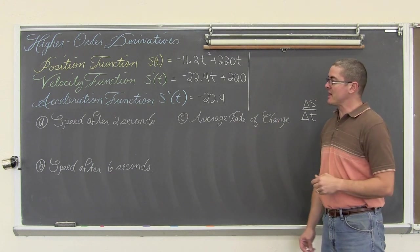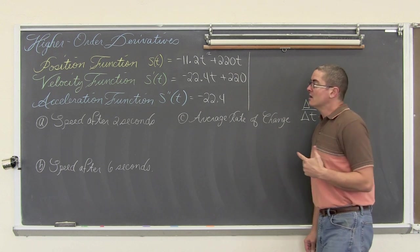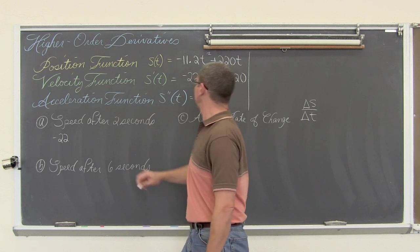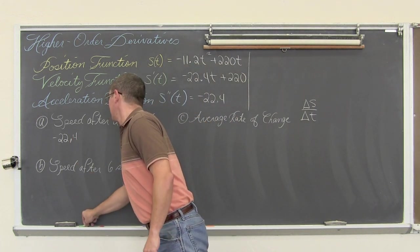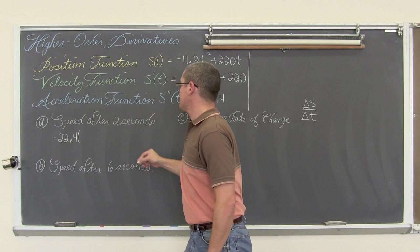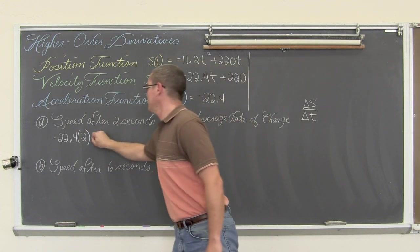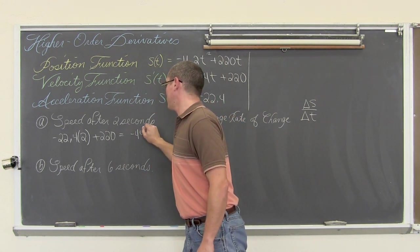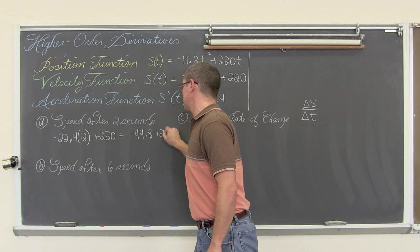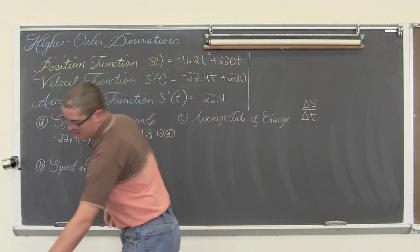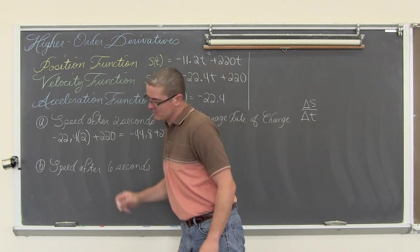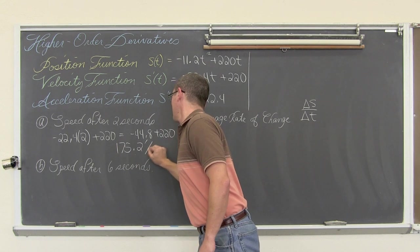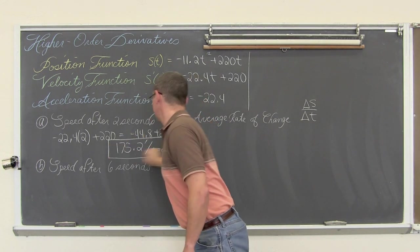But what is the speed of the car after 2 seconds? Well that is the first derivative. We will see the speed of the car. So that is going to be equal to negative 44.8 plus 220 and that comes out to be 175.2 feet per second.